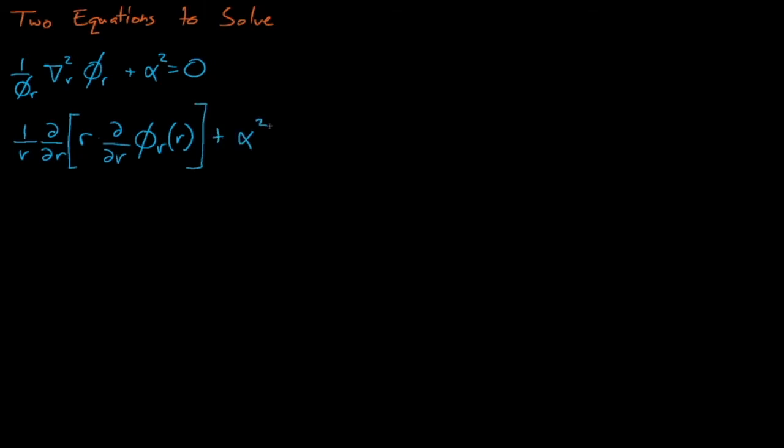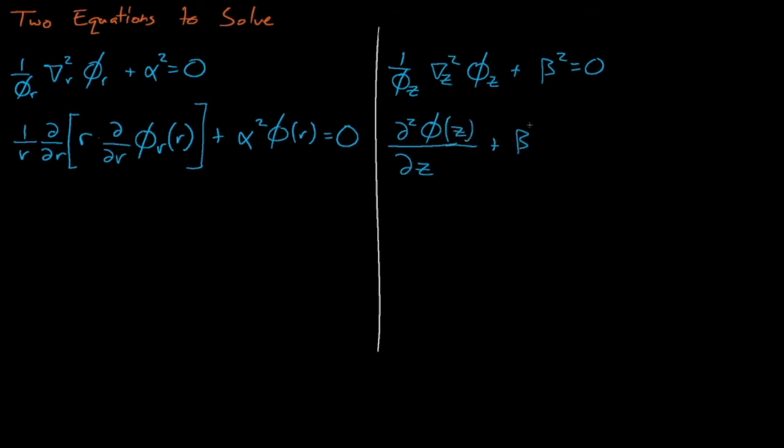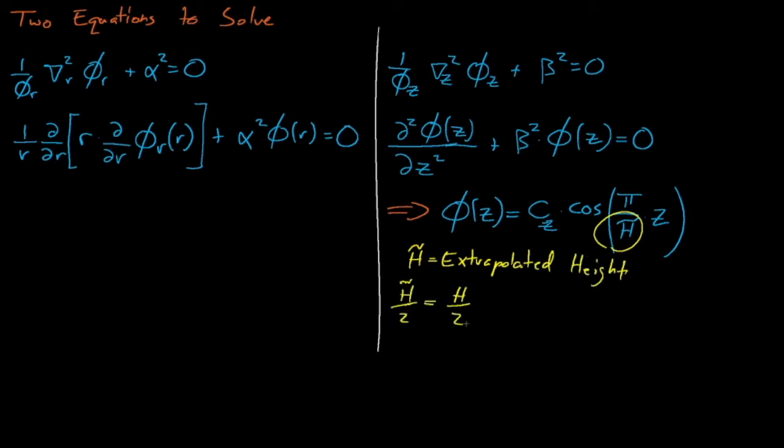In the last class, we solved an analogous version of this z-dimension differential equation, except for the x-dimension. And so, if we solve this equation, we find that the fundamental mode of the flux in the z-dimension is described by this cosine function, where h tilde is the extrapolated height of the cylinder.